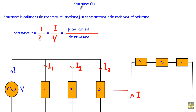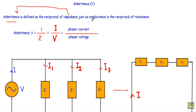In this video I will talk about admittance. Usually we use the term admittance in case of parallel AC circuits. Admittance is defined as the reciprocal of impedance, just as conductance is the reciprocal of resistance. In a DC circuit, resistance indicates the opposition to current flow, and conductance indicates the easiness of current flow.